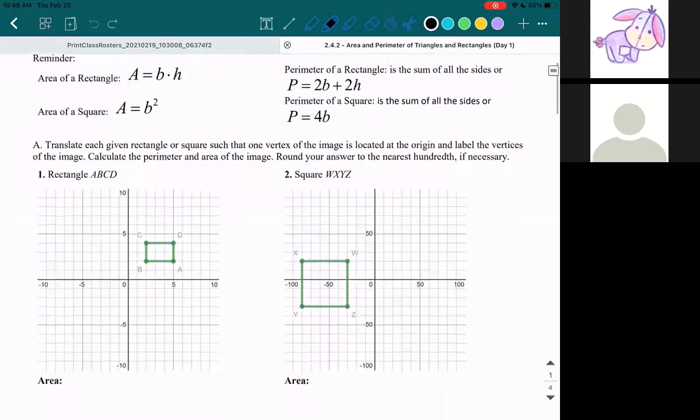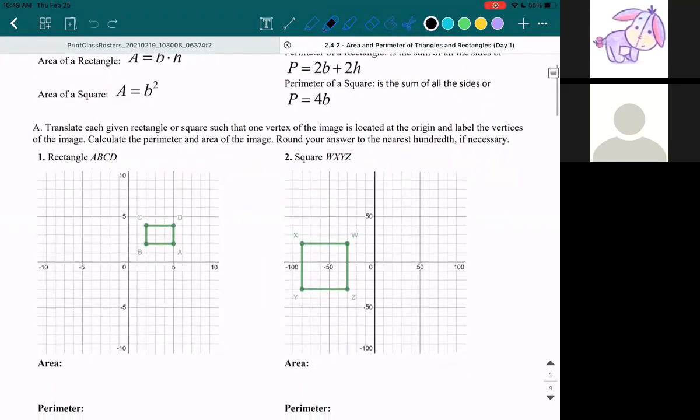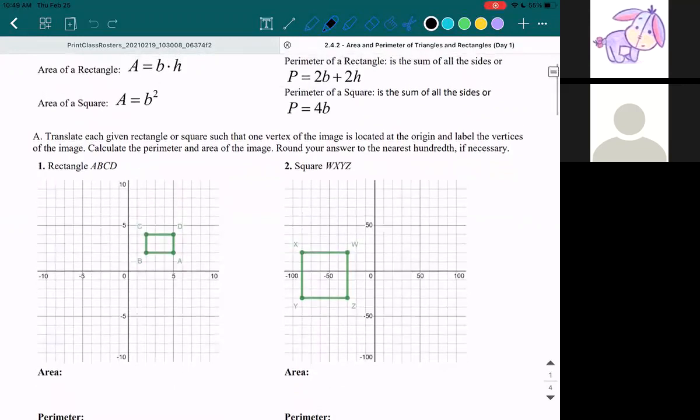So now that we got that part, let's do part A. Part A says, translate each given rectangle or square such that one vertex of the image is located at the origin and label the vertices of the image. Calculate the perimeter and area of the image.